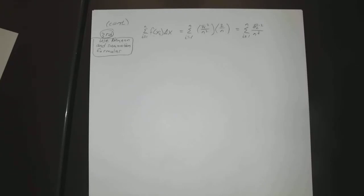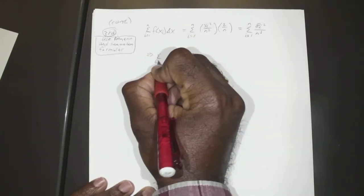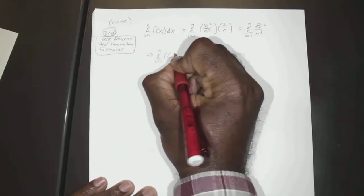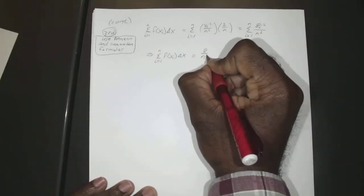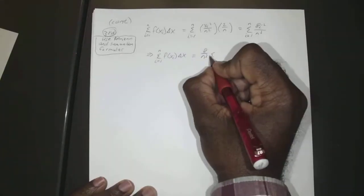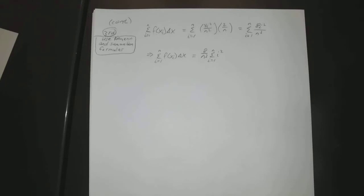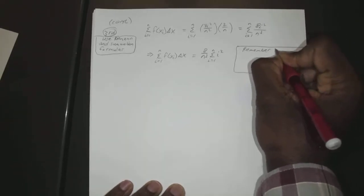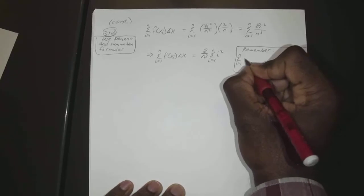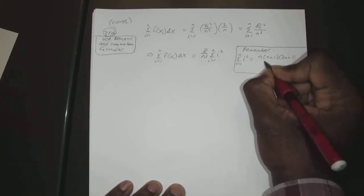We can factor out everything without an i, so this becomes 8 over n cubed times the sum from i equals 1 to n of i squared. Recall that the sum from i equals 1 to n of i squared equals n(n+1)(2n+1) divided by 6.